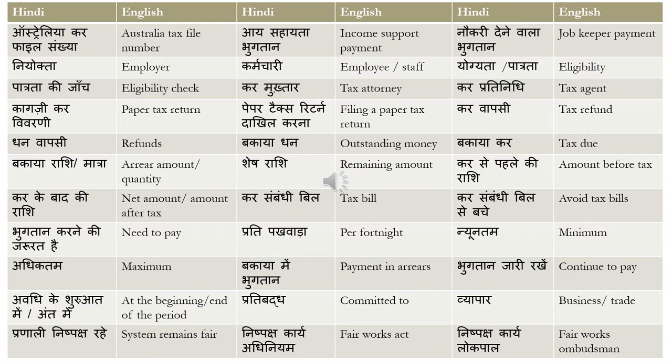That is called 'Naukri Dene Waala Bhutan.' 'Niyokta' means employer, 'karmachari' means employee or staff. 'Yogyata' or 'patrata' means eligibility — 'aap is lab ke liye yogi hai' or 'aap is lab ke patr hai' means you are eligible for a particular benefit. 'Patrata ki jaanch' means eligibility check.